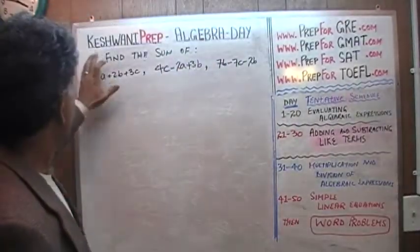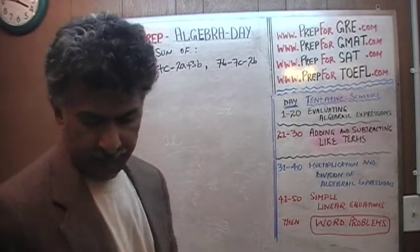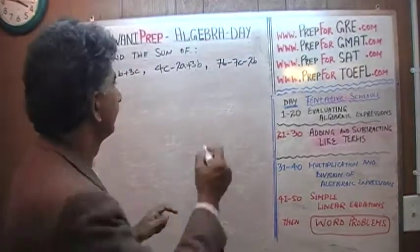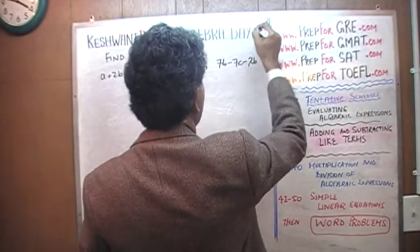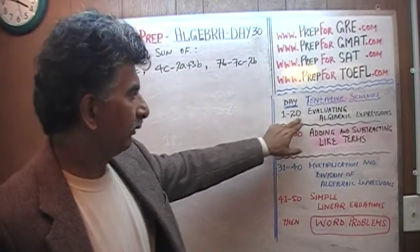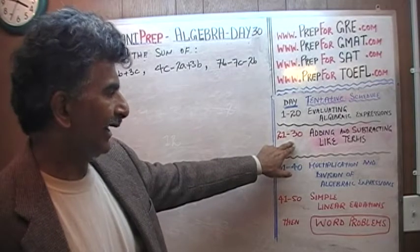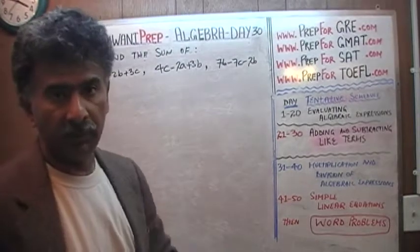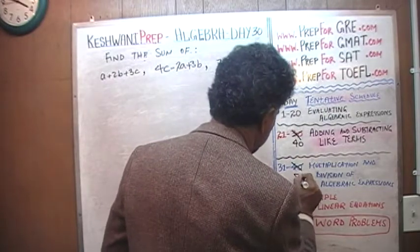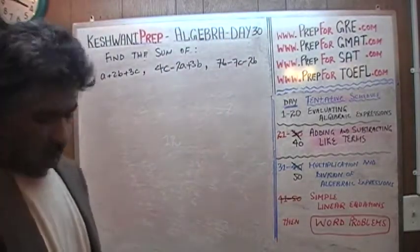Hello, my name is Keshwani — K-E-S-H-W-A-N-I — and we are here to learn algebra. Today is lesson number 30, day number 30. The original game plan was to cover evaluation of algebraic expressions in the first 20 days, then adding and subtracting like terms in the next 10 days. It does not look like that — day 30 and I'm not even halfway through — so we need to change this to 40, and the next phase will be pushed to 50.